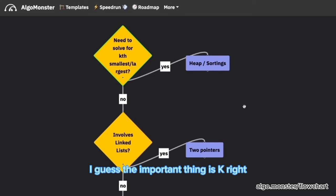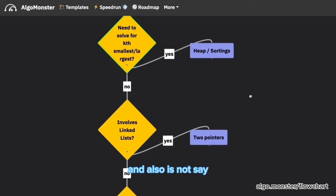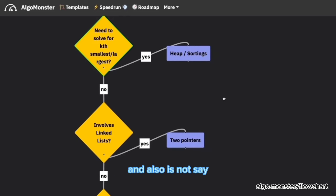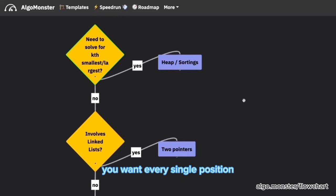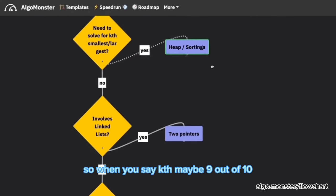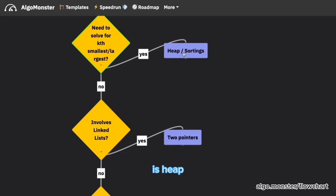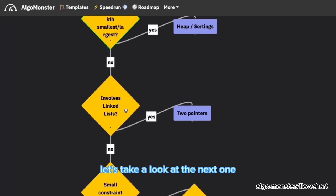Right. I guess the important thing is kth, right? It's not the first one or the smallest one or the largest. If it's not kth, you can just find it directly by traversing, right? And also it's not sorting the entire array. You want every single position. You only want the kth, right? That's where heap is fast. So when you say kth, maybe 9 out of 10 is heap. It could be sorting though sometimes.